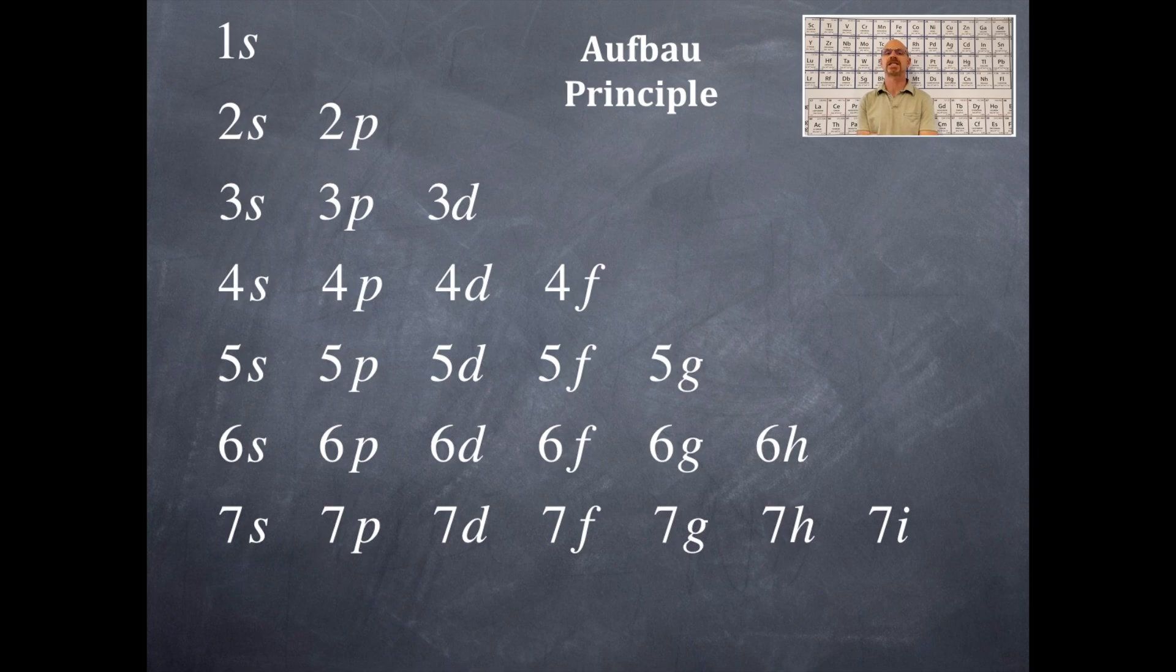Here is this pattern. I want you to take a look at this pattern here first before I show you how it's applied. On the far left-hand side, I have a bunch of S's all in a vertical row. Then next column over, a bunch of P's, then D's, F, G, H, I. For the most part, you won't have to go in the G, H, and I region, but I want you to see what the pattern is. Then on the horizontal sections, I'm just going to do numbers, positive whole integers by one. So one, two, three, four, five, six, and seven. This is how you write down the orbitals of the subshells.